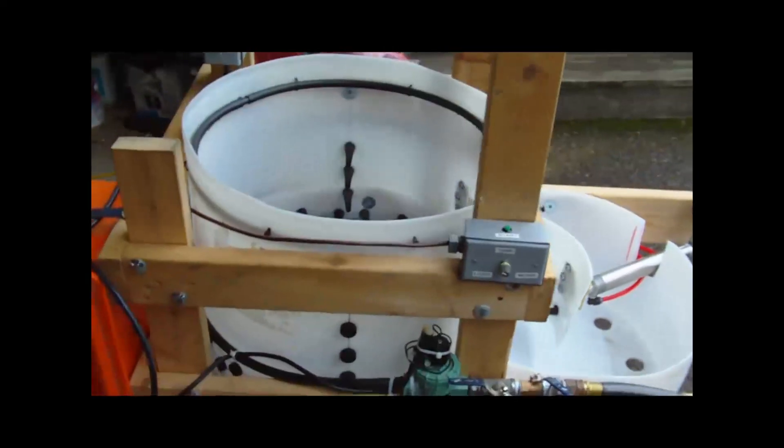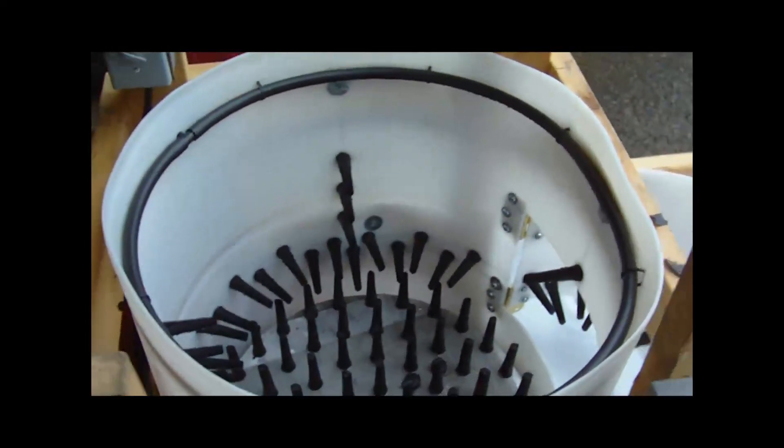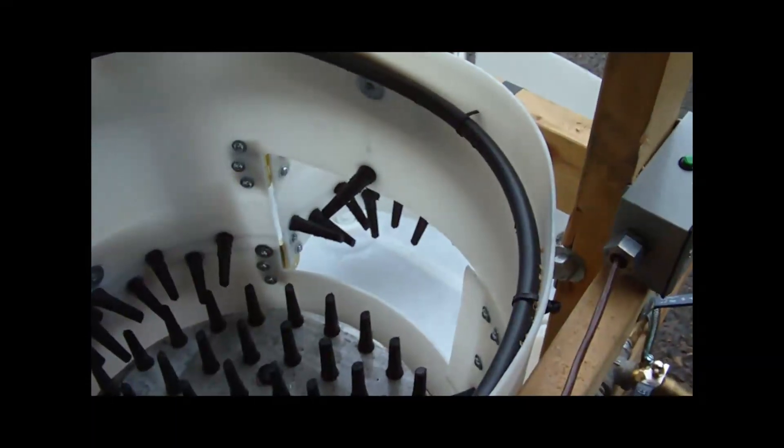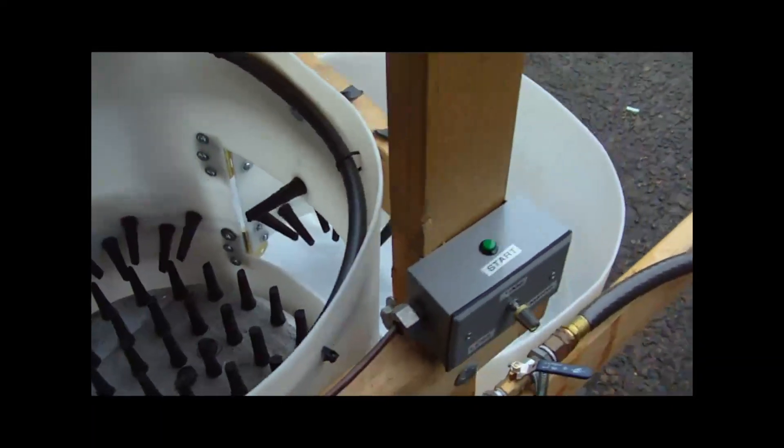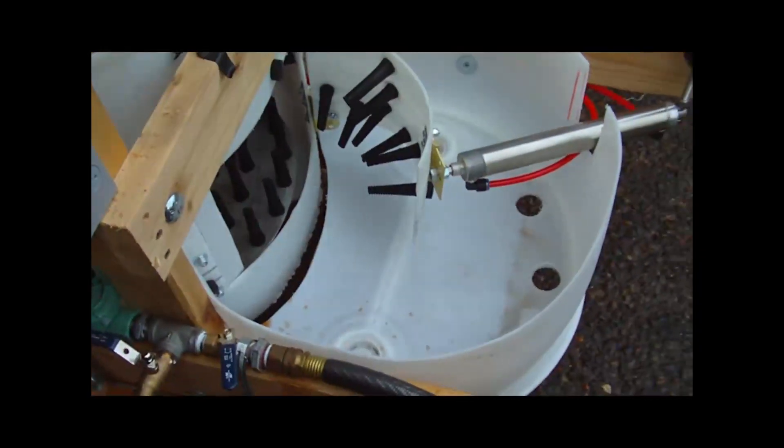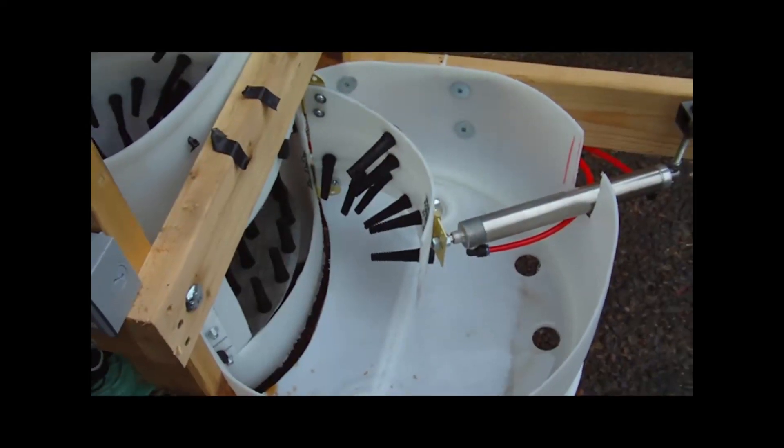This is a trapdoor chicken plucker, which means that the chickens get flung out. You can see the door there with the pieces, and I'll come across over here. There's the door, and here's where they get flung out when the time is up. This is pneumatically operated.